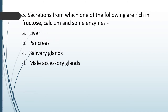Question No. 57: Secretions from which of the following are rich in fructose, calcium and some enzymes? Options: Liver, Pancreas, Salivary gland, Male accessory gland. The correct answer is Option D, the male accessory glands.